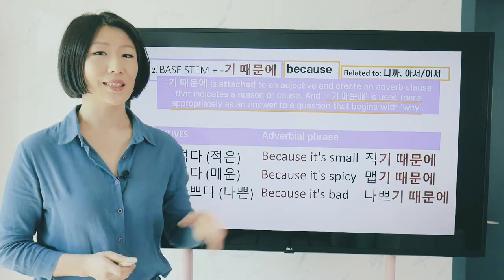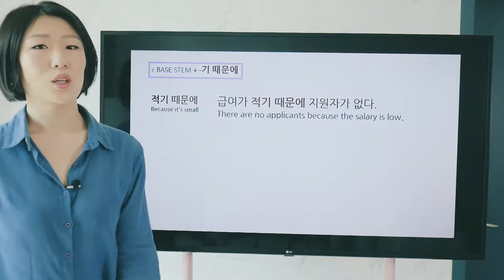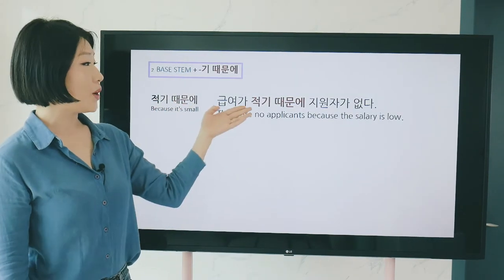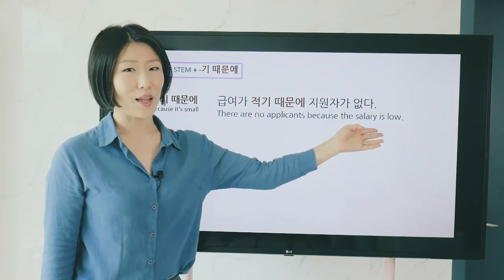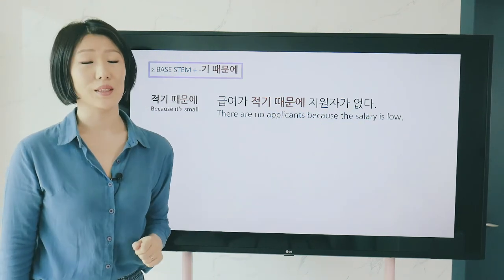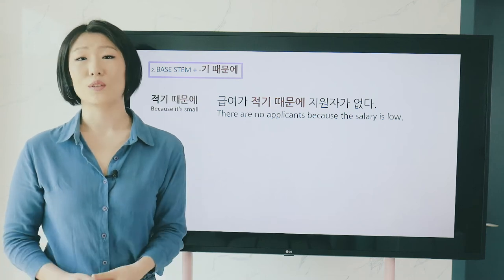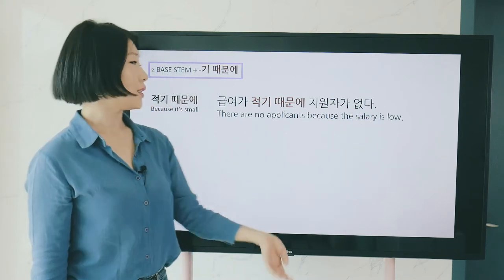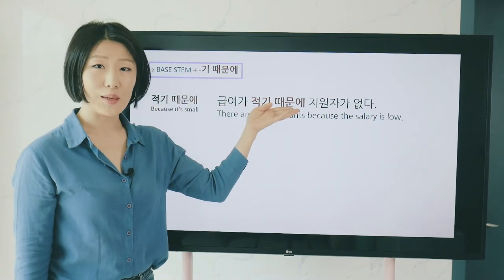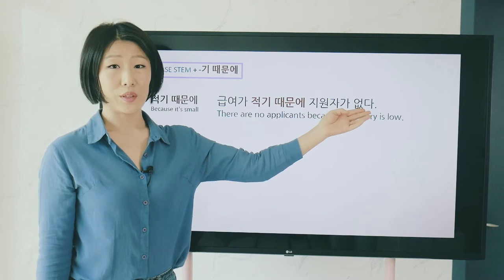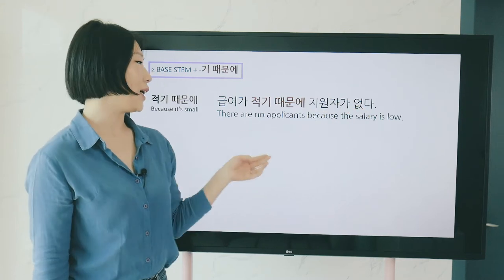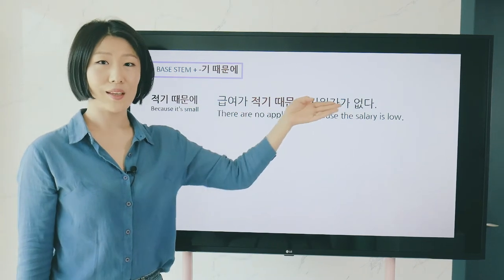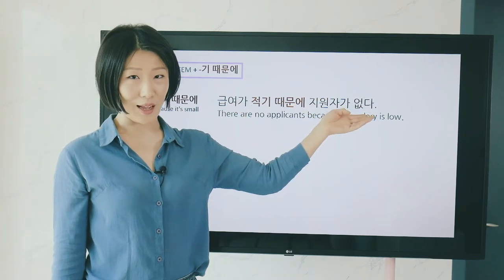Let's look at 적기 때문에 in a sentence: 급여가 적기 때문에 지원자가 없다 — 'There are no applicants because the salary is low.' 급여 means salary, and 지원자 means applicants.